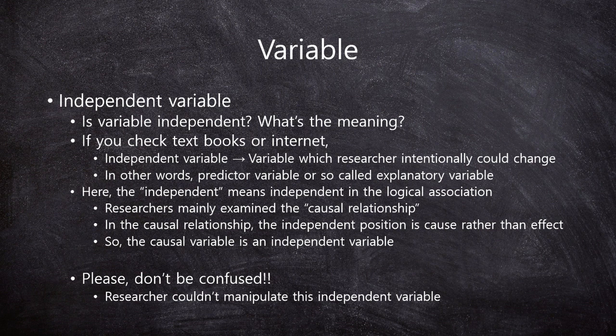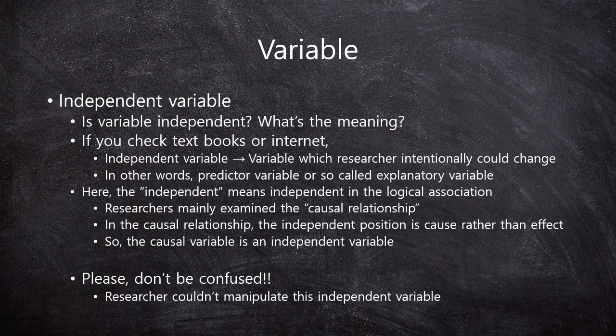At this point, please don't be confused. The independent variable is a variable which a researcher intentionally could change, but it doesn't mean the researcher can manipulate the independent variable — no, never. Here, the researcher could choose what variable to designate as the independent variable. You can choose the independent variable from many potential or candidate variables.